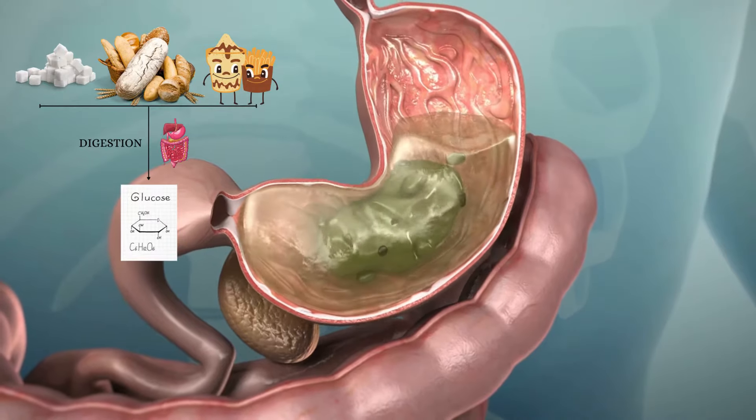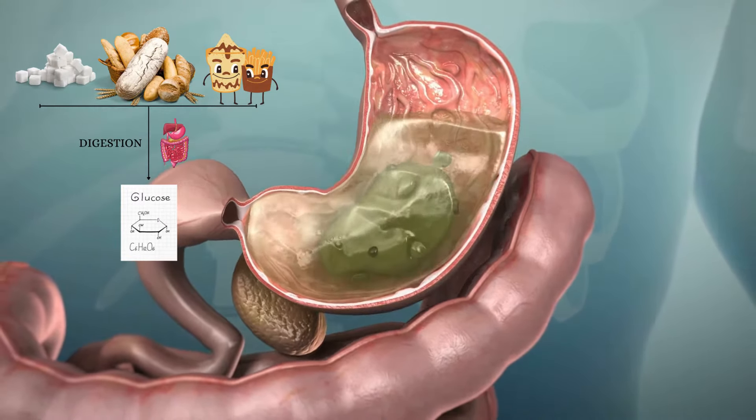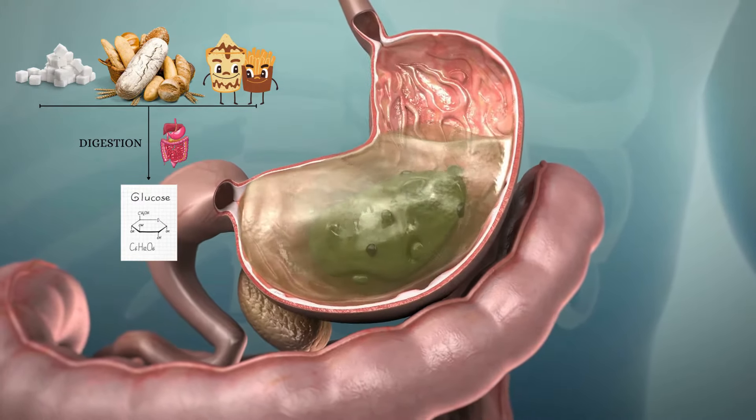In a normal situation, when you eat a meal, your digestive system will break down sugar into a simple form called glucose. Glucose is the main form of energy for our body.